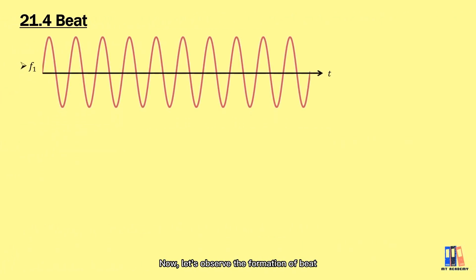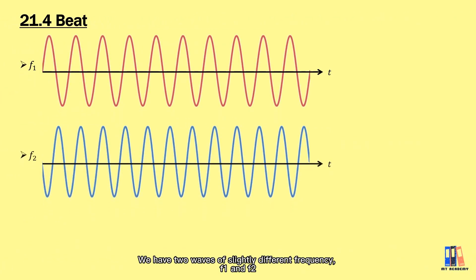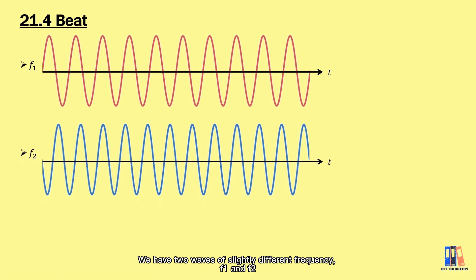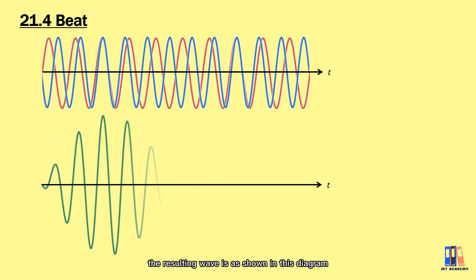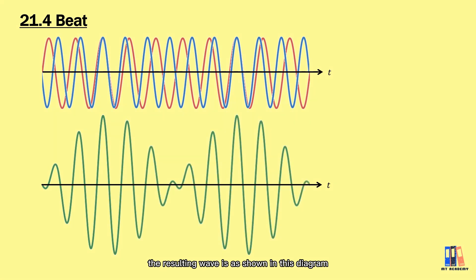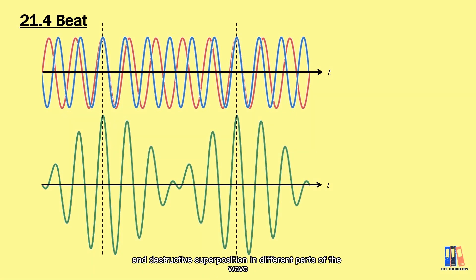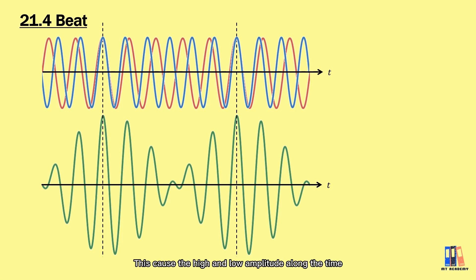Now let's observe the formation of a beat. We have two waves of slightly different frequency, f1 and f2. When we superimpose both waves, the resulting wave is as shown in this diagram. We have constructive and destructive superposition in different parts of the wave, which causes high and low amplitude along the time — and this is how the beat is formed.